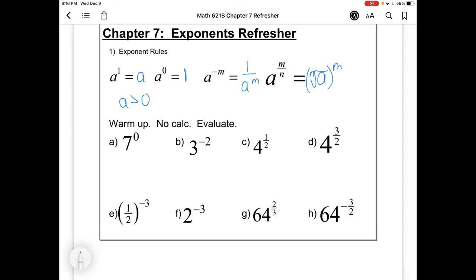So there's a little warm up. You might want to pause and then just try these few just to make sure that you've got a clear idea of how exponent rules work. And we're back. 7 to the 0, that's just 1. The negative exponent causes us to flip. So this is 1 over 3 squared, or 1 over 9.